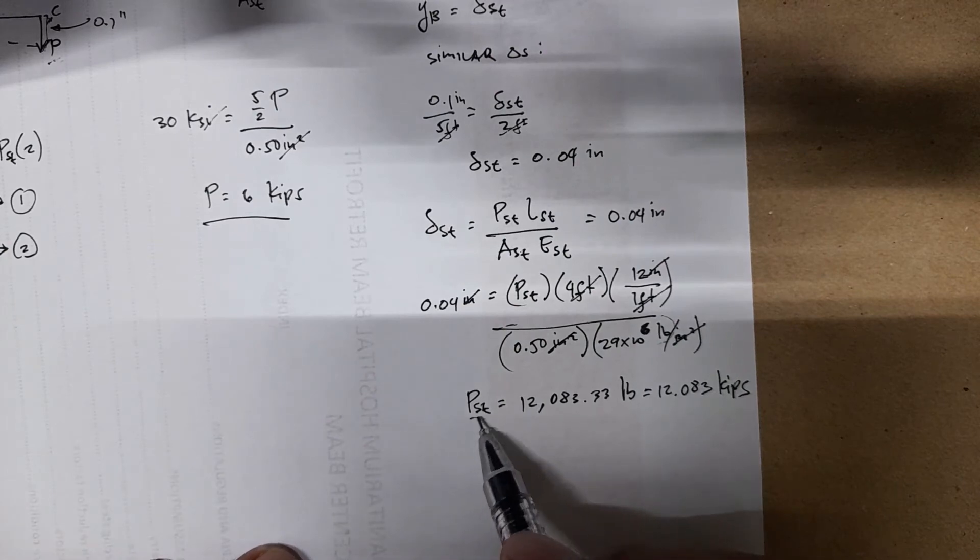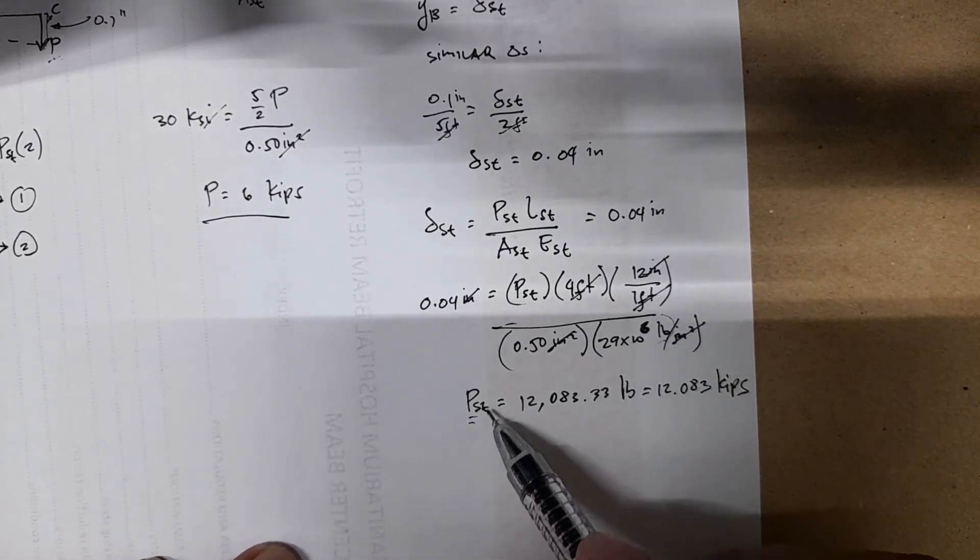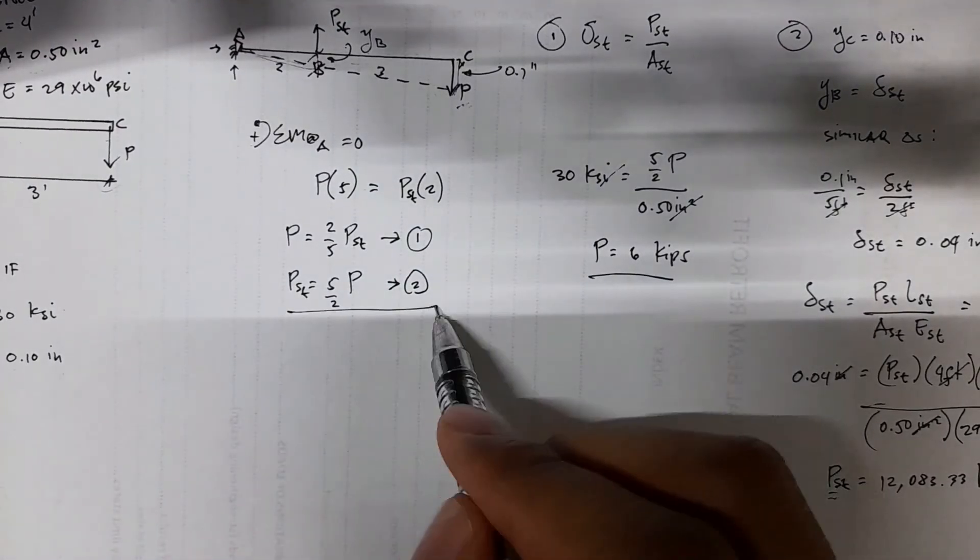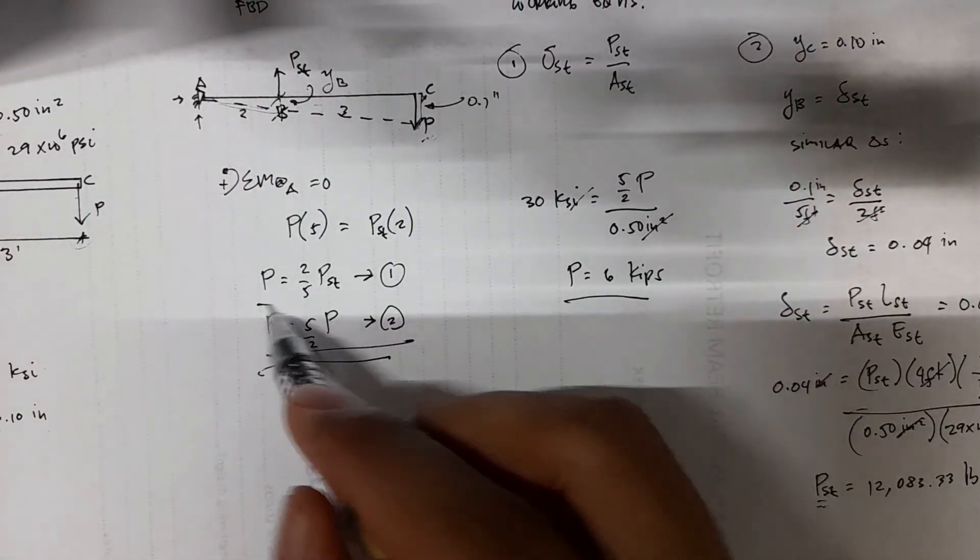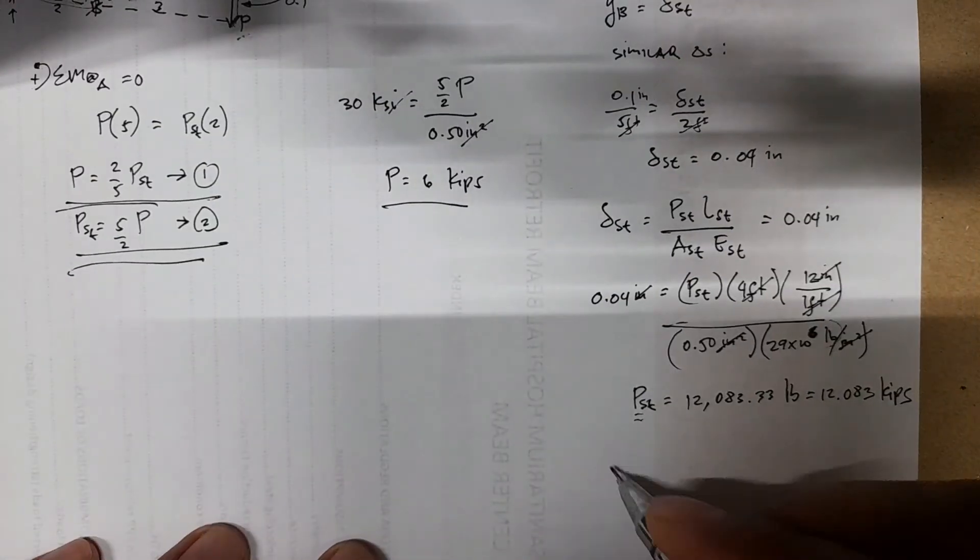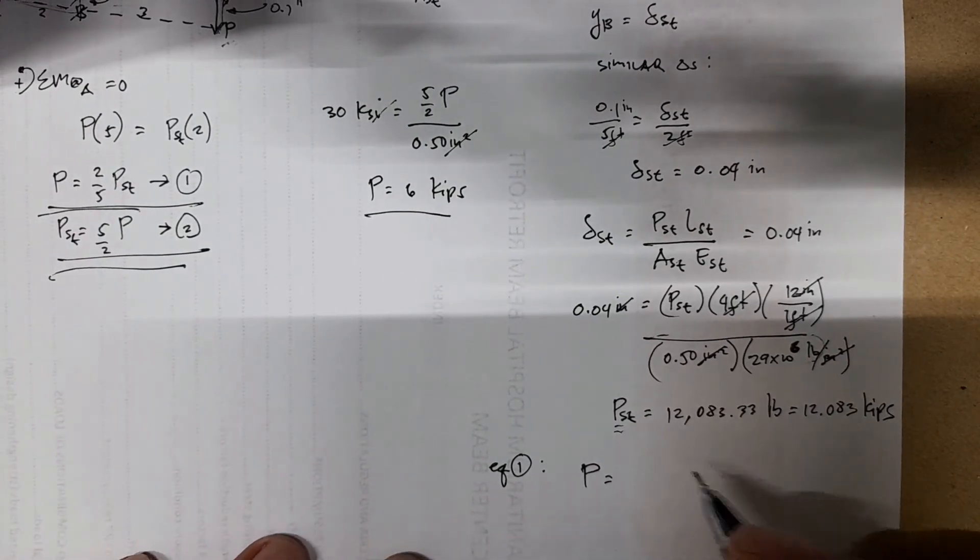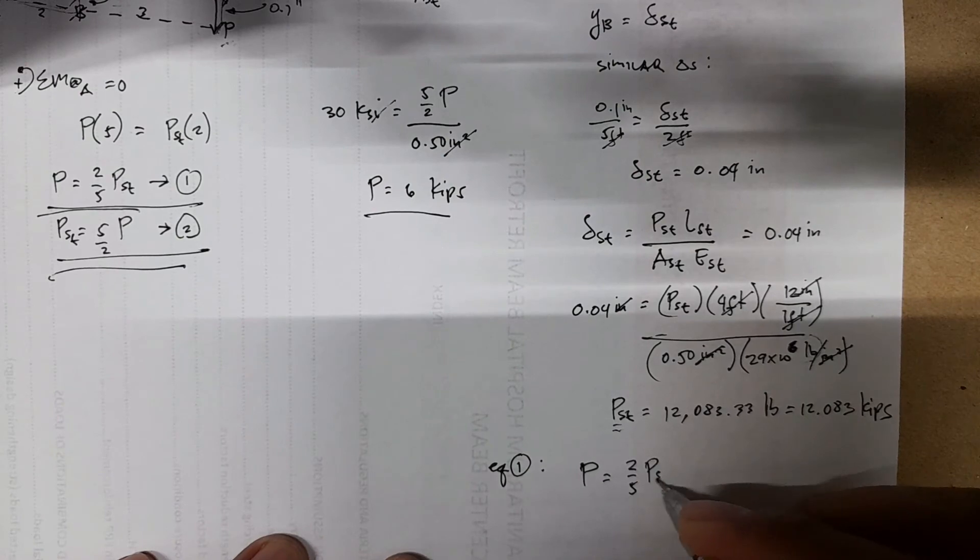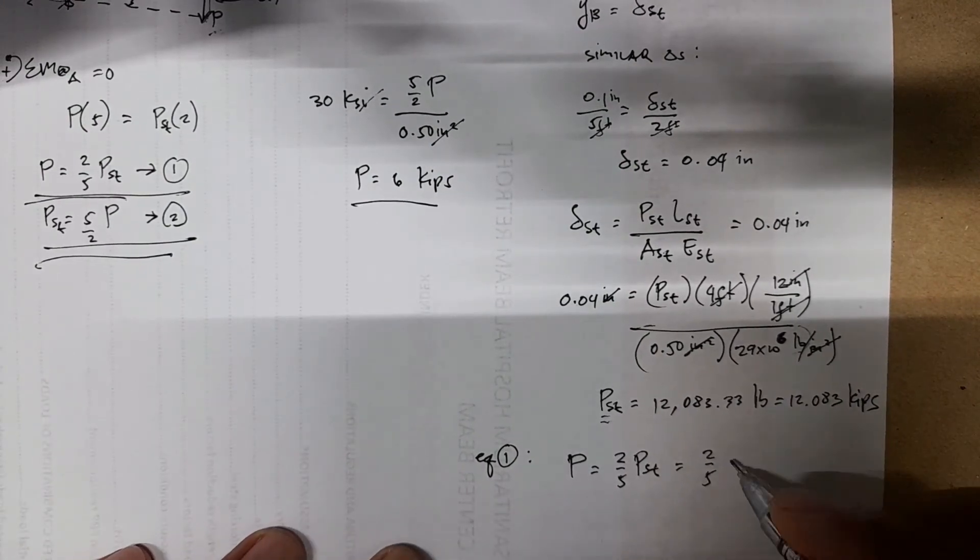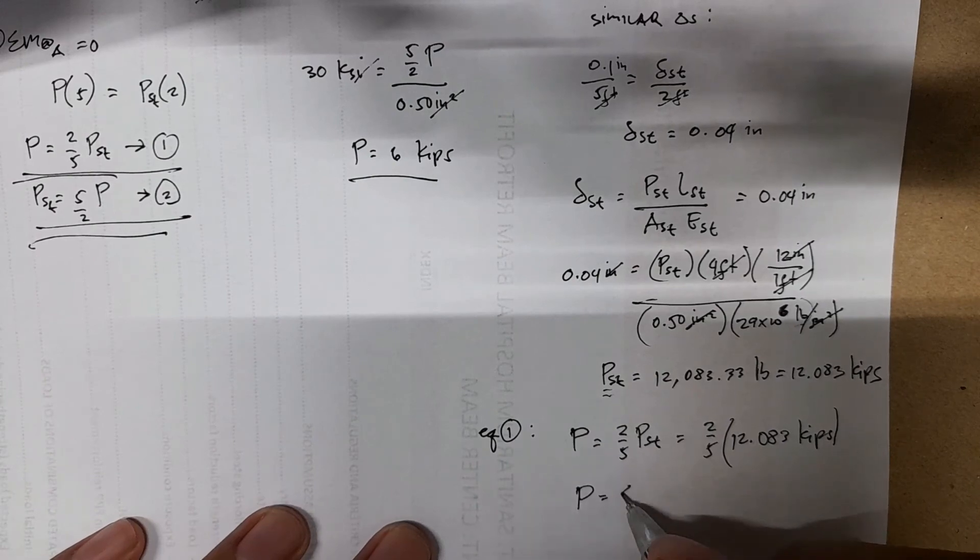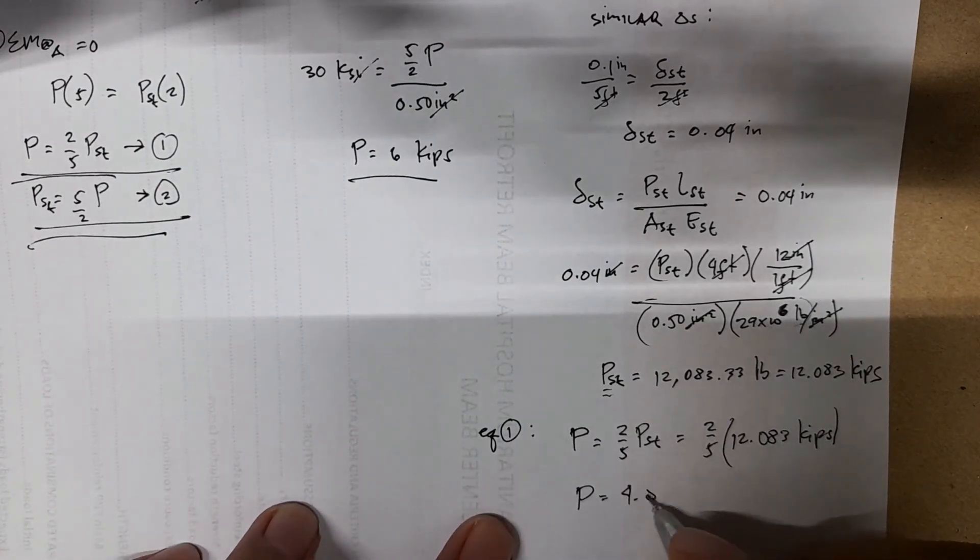But this is not yet P, so you have to get the value of P using equation 1. P equals 2 fifths of PST. Therefore, you have 2 fifths of 12.083 kips. Therefore, P equals 4.83 kips.